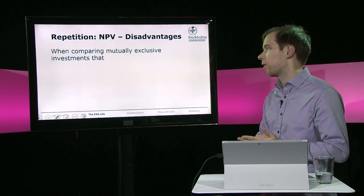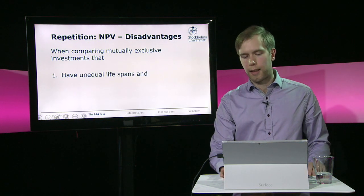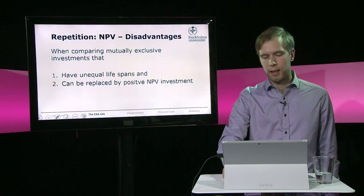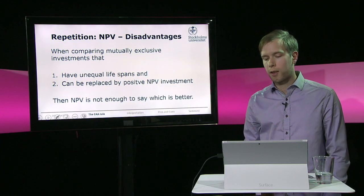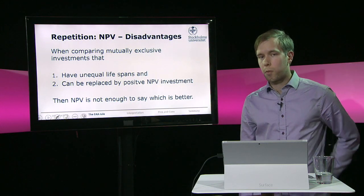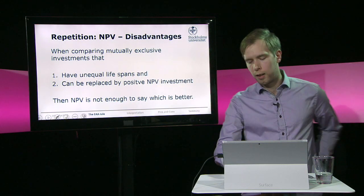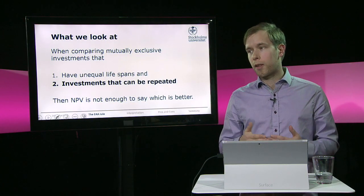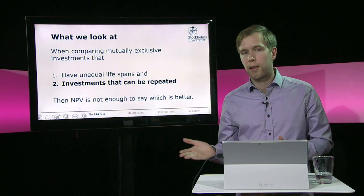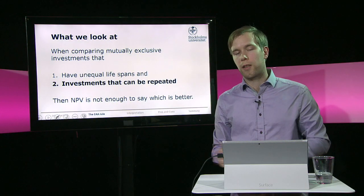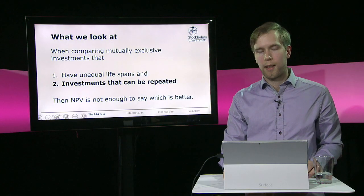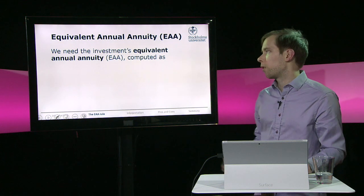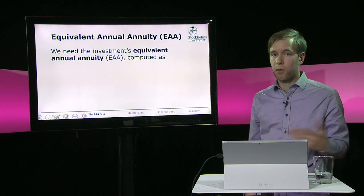One of the disadvantages with NPV is that when we compare mutually exclusive investments with unequal lifespans and they can be replaced by a positive NPV investment at the end, then just NPV is not enough to say which one is better. We're going to look at investments that can be repeated — the exact same investment at the exact same terms — so we can simply add them onto each other after the end of the investment. Then NPV is not enough, but we can compute the equivalent annual annuity, which we already know how to do.